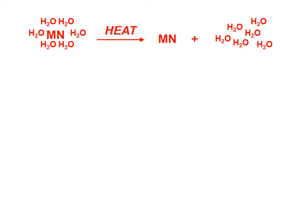Here we have an equation that shows how we can separate the water from the salt. On the reactant side, we have the hydrate — the salt and the waters combined. When we heat the hydrate, the water molecules will be driven off into the air, leaving behind in our container only the anhydrous salt. It takes energy to separate the waters from the anhydrous salt.